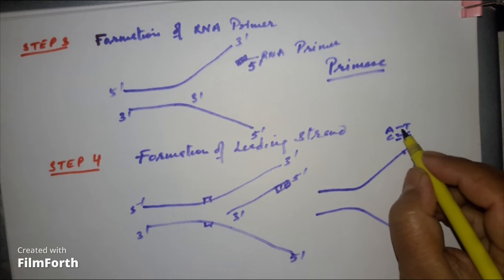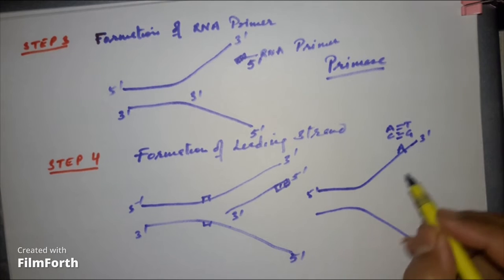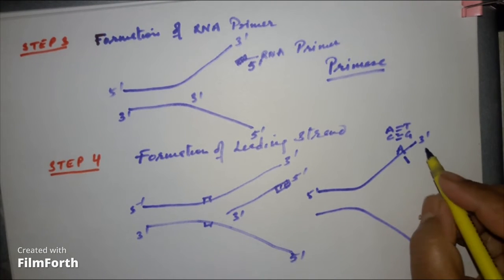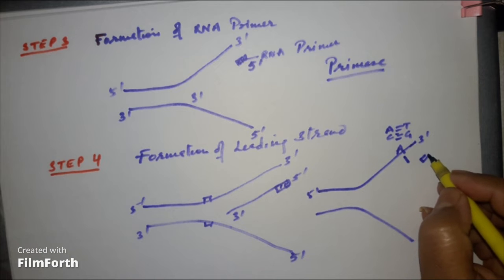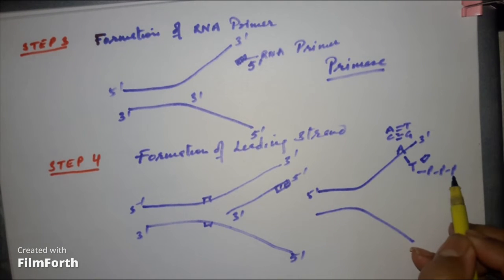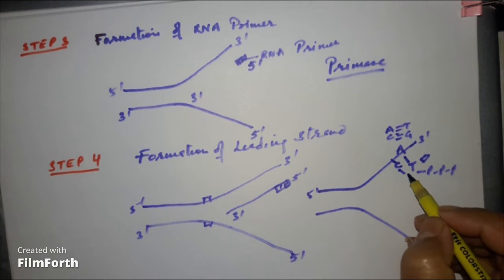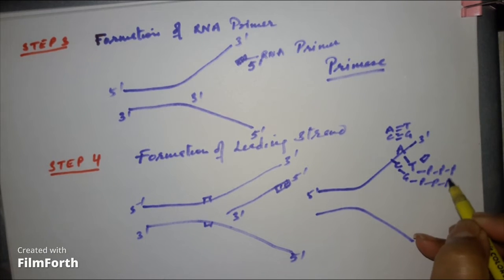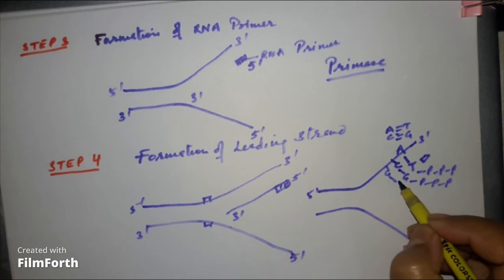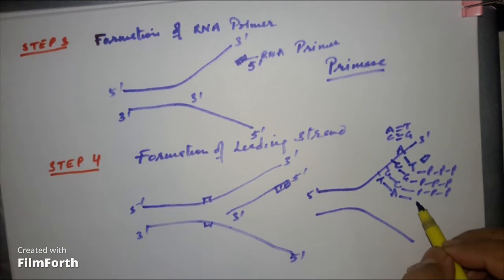So if there is adenine on this side, complementary strand will be thymine triphosphate. Similarly if on this side the base is C, then it will be guanine on this side. If there is guanine then cytosine triphosphate, and so on. The complementary base pairing. If there is thymine then adenosine triphosphate.